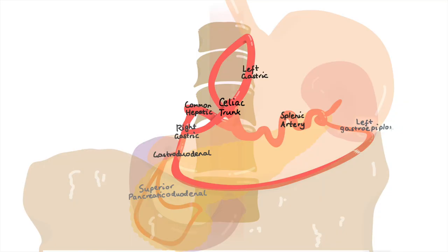The left one comes off here from the splenic artery. It meets up with the right gastroepiploic, which comes from the gastroduodenal artery.